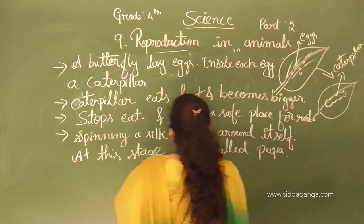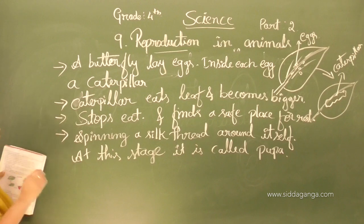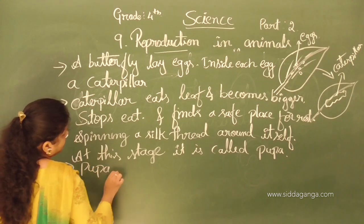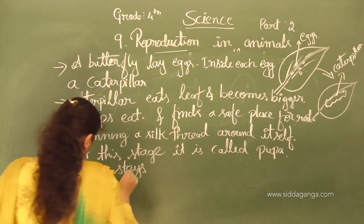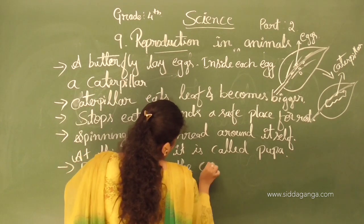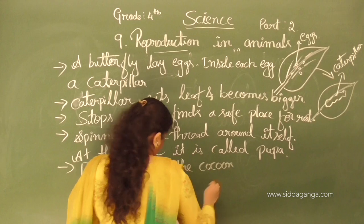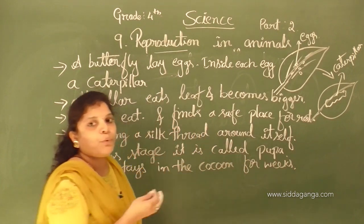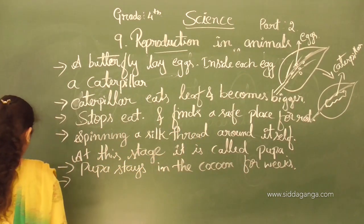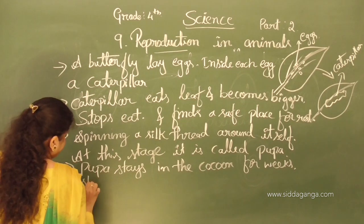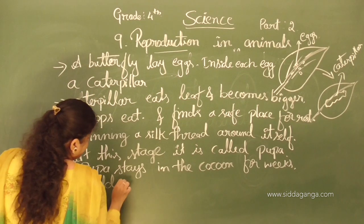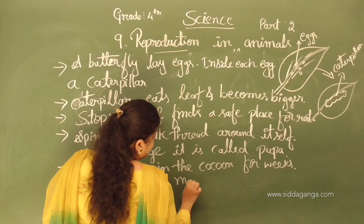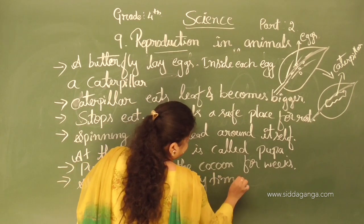This state is called pupa. The caterpillar spins a cocoon around itself. Normally this pupa stays in the cocoon for weeks. In this state, they are shedding their skin many times. This process is called moulting.